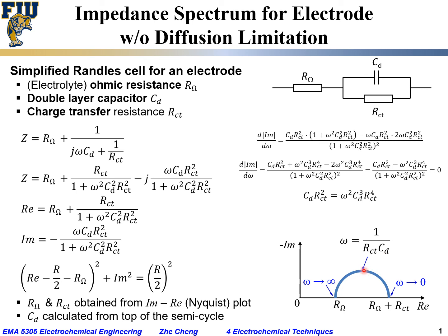In summary, by measuring the impedance spectrum for a single electrode — assuming no diffusion limitation and fast mass transfer — we can extract three important parameters: the ohmic resistance associated with the electrolyte near that electrode, the charge transfer resistance for that electrode, and the double layer capacitance at the electrode-electrolyte interface. These are key kinetic parameters for the electrode reaction of interest.